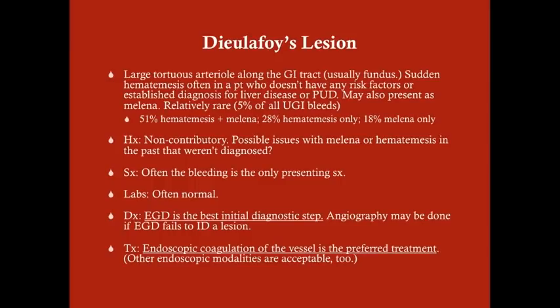Dieulafoy's lesion is a large tortuous arteriole along the GI tract, usually in the fundus — the proximal part — of the stomach. It causes sudden hematemesis, often in a patient who doesn't have any risk factors or established diagnosis for liver disease or peptic ulcer disease. This is a congenital condition you're born with, not something caused by alcoholism, liver disease, or peptic ulcer disease.